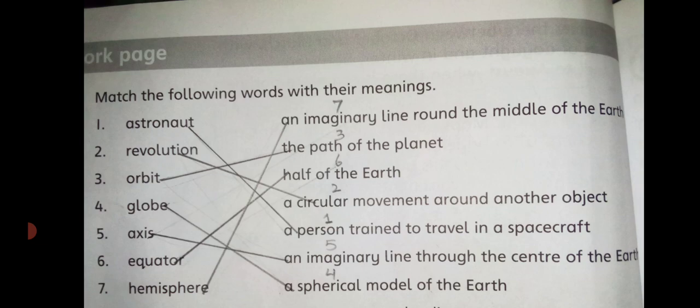The next word is Revolution. We have already in the previous lecture written in the reading what is revolution, what is rotation, and what is the movement of the earth. Revolution is the movement of the earth around the sun — a circular movement around another object. So you have to match revolution with this meaning.